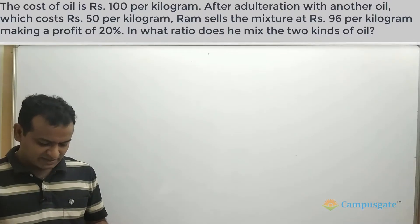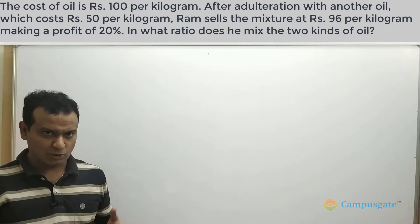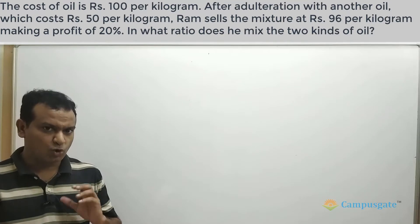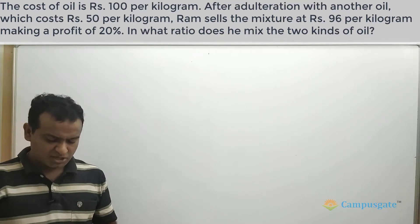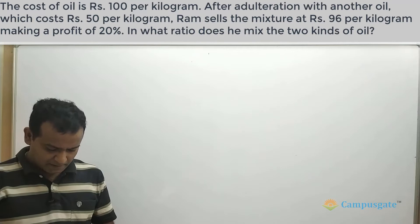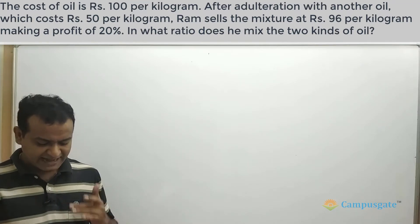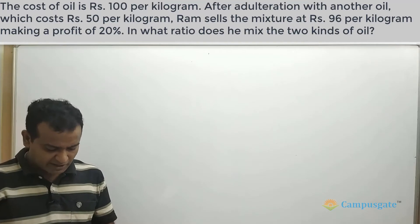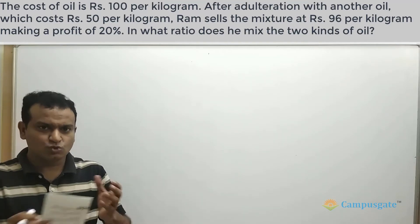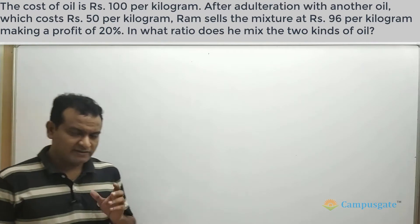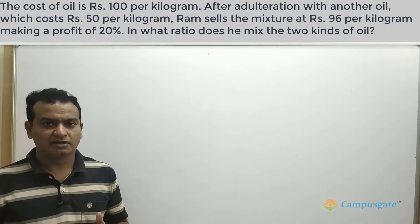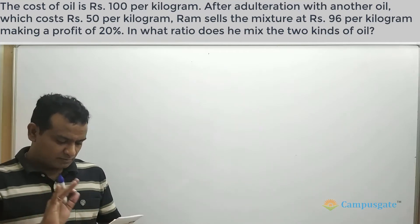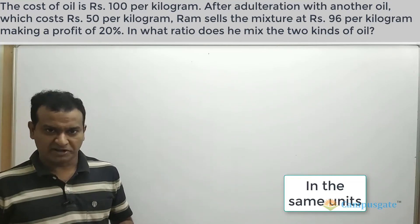In this question, it is given that the cost of oil is 100 rupees per kilogram. After adulteration with another oil — some low quality oil which costs 50 rupees per kilogram — Ram sells the mixture at 96 rupees per kilogram making a profit of 20 percent. We need to find in what ratio he mixes these two kinds of oil. Remember, whenever you are solving any problem related to the allegation rule, all averages should be in the same quantities.